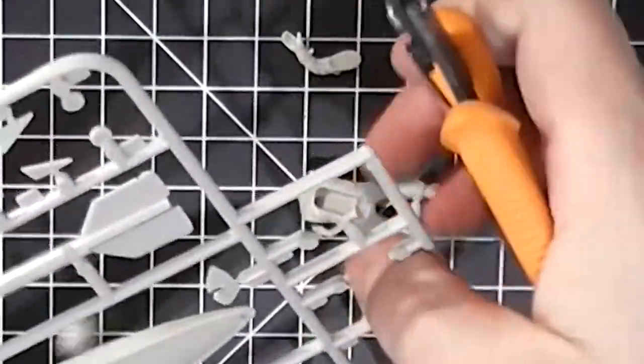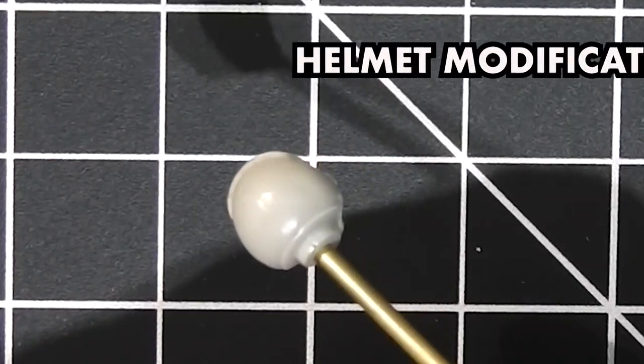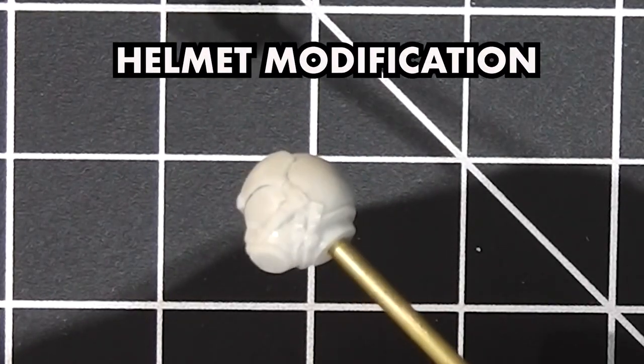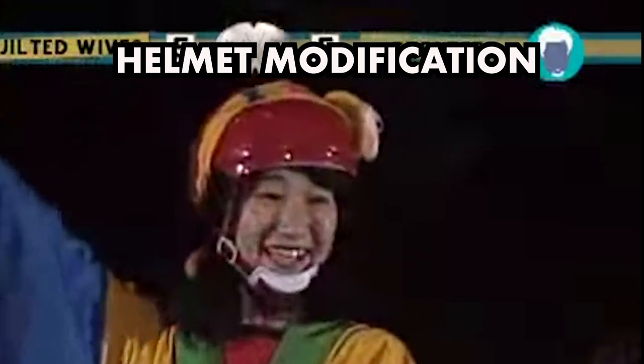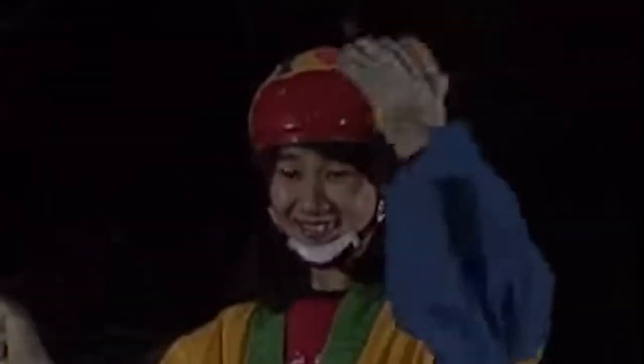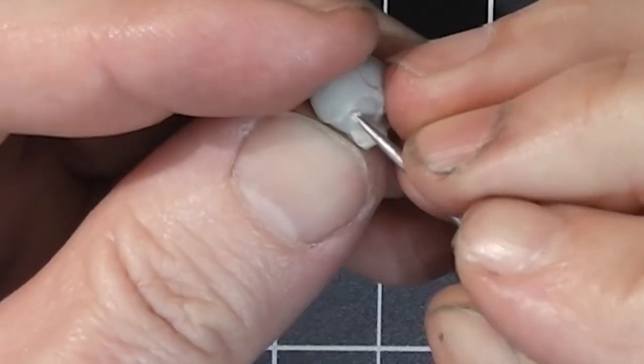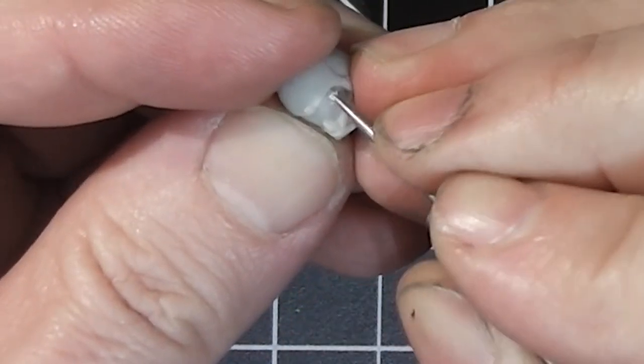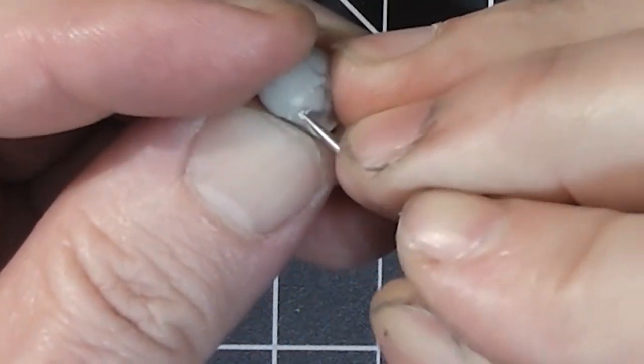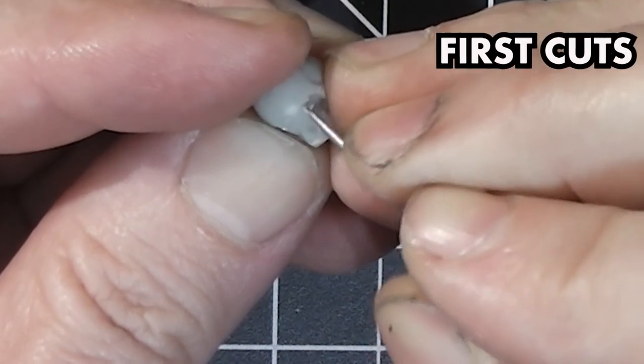After getting the bodies, arms, and helmets off the sprues, I turned my attention to the helmet. This is my helmet. There are many like it, but this one is mine. The oxygen mask as molded appears to be a very old type, 70s era or earlier, so it's got to be modified to match my references.